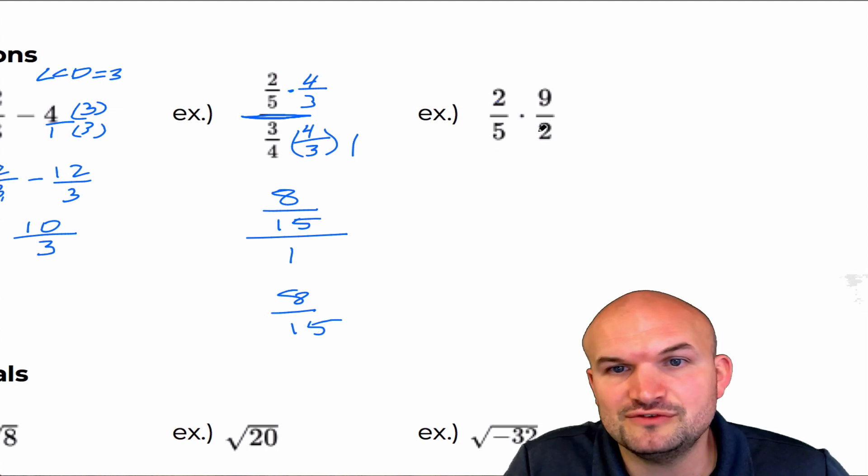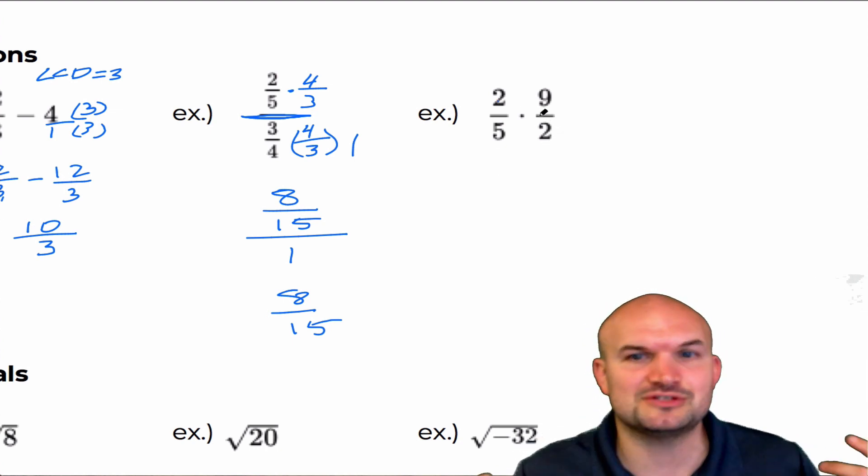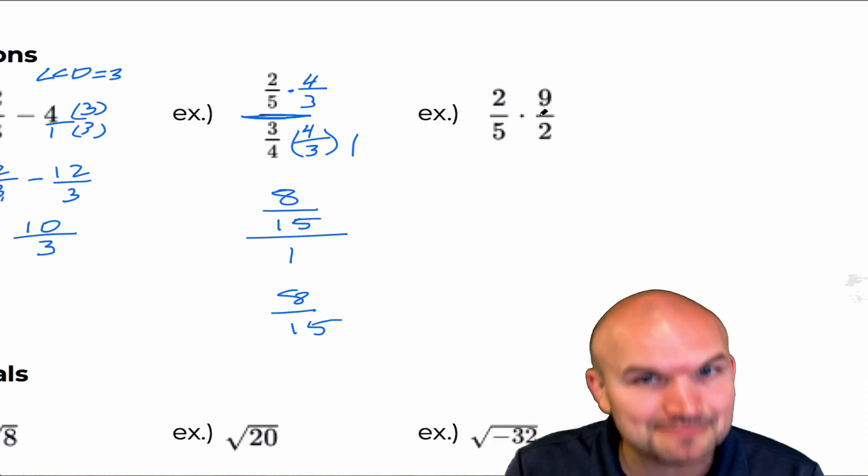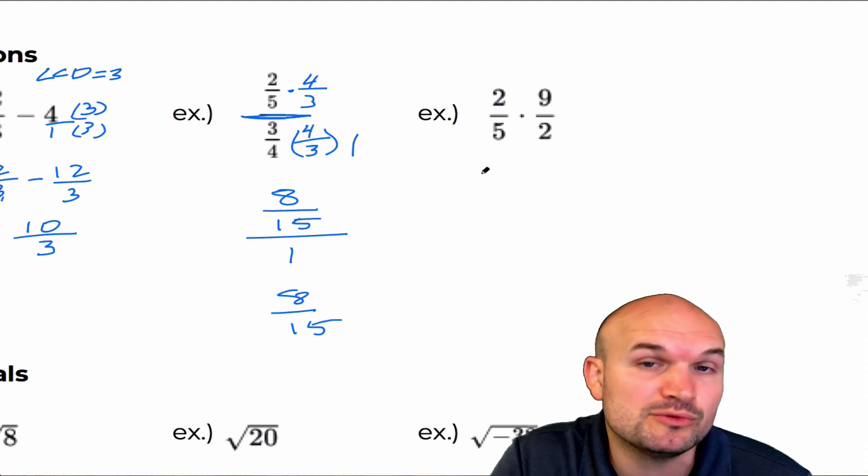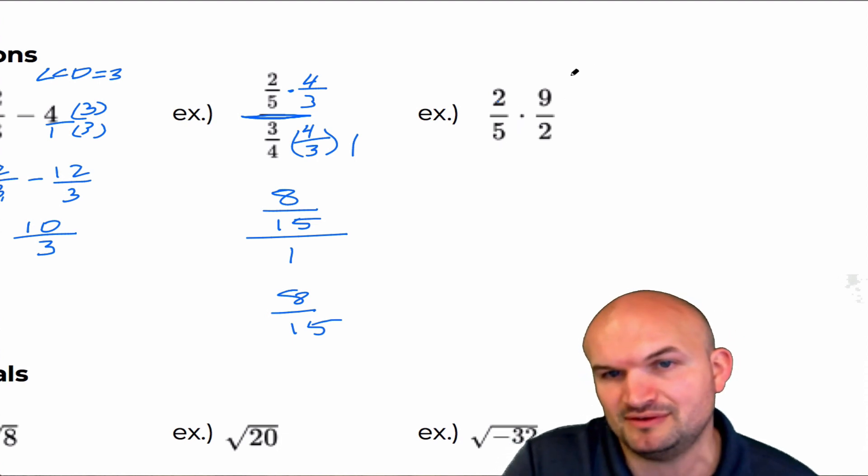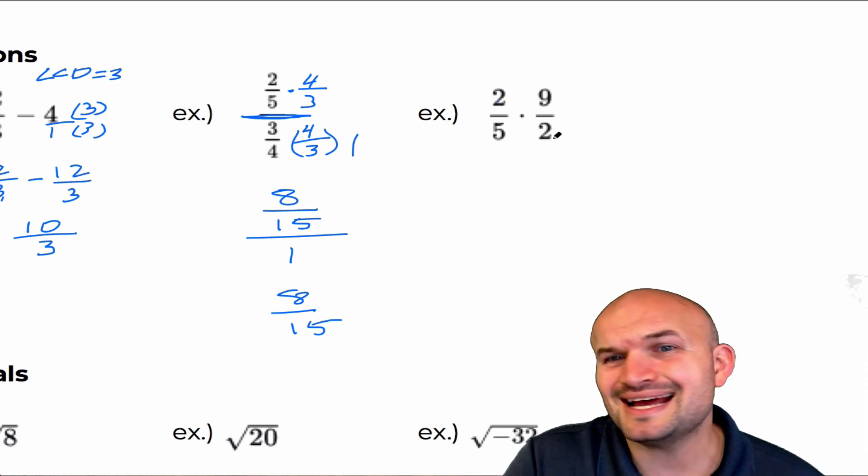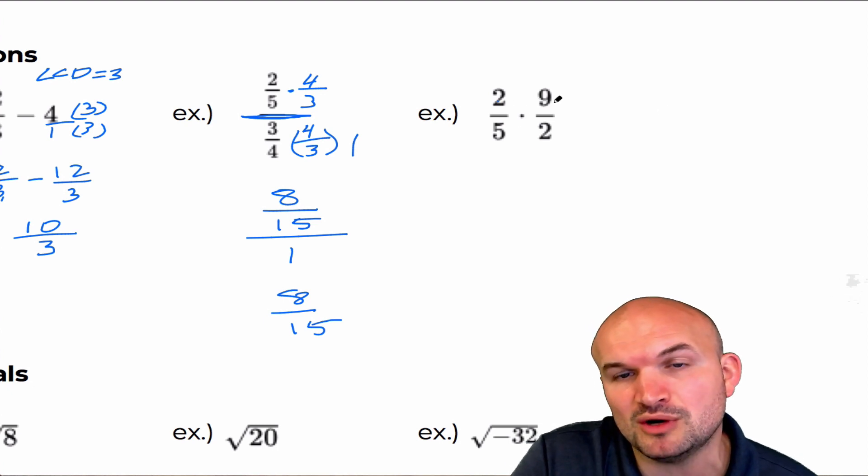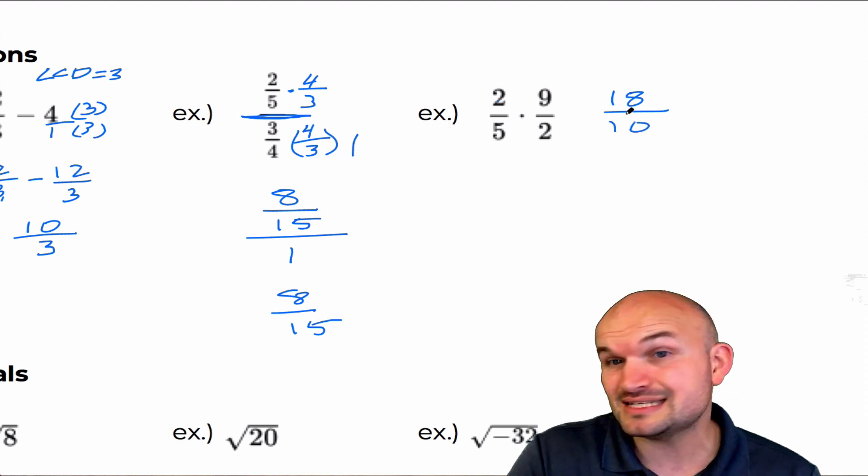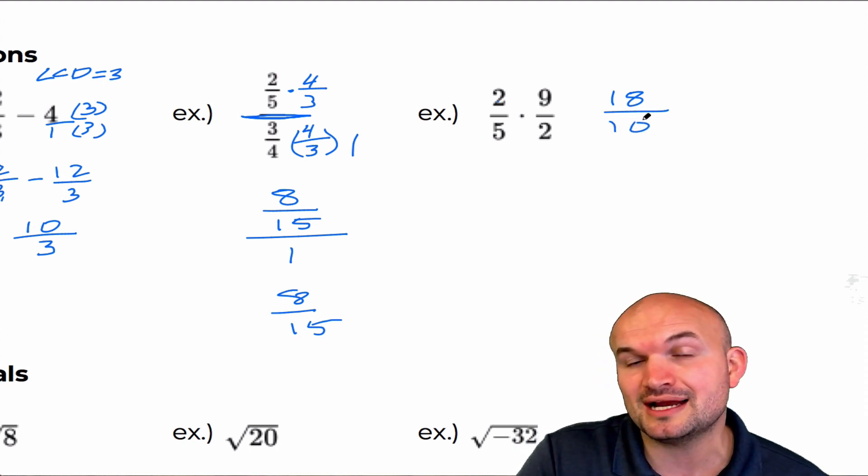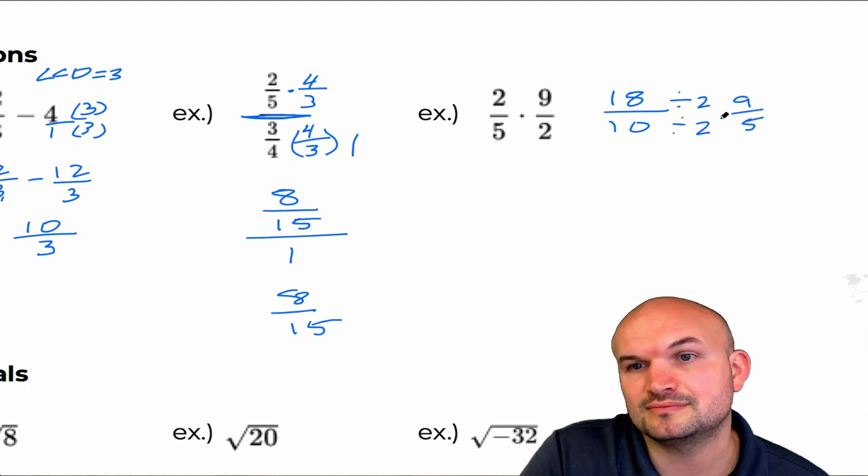For the next example here, we have two fifths times nine halves. Now a lot of times students will get into this and they go to the cross multiplication, which I absolutely hate. So please make sure you do not apply cross multiplication or even just remove cross multiplication from your memory. That's probably even better. But I decided on this example because one thing that we notice is, when you multiply fractions, you can multiply directly across eight over ten. But you realize here we need to simplify this. So we can divide the top and the bottom. They both have a common factor of two. So if you divide the top and the bottom by two, you get nine fifths.